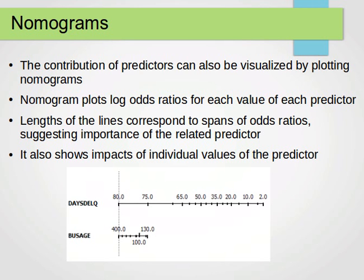One more thing is the nomograms. Nomograms can be used to visualize the contribution of predictors. Nomograms plot log odds ratios for each value of each predictor. The lengths of the lines correspond to spans of odds ratios suggesting importance of the related predictor. They also show impacts of individual values of the predictor. This is just an example of a nomogram.